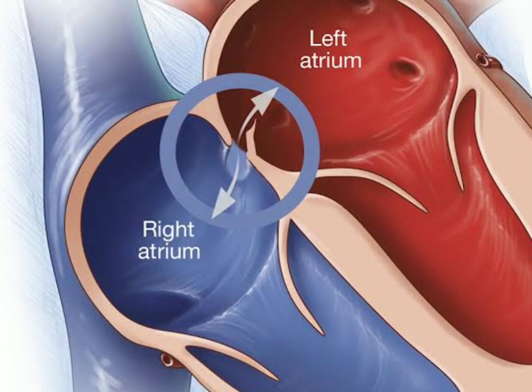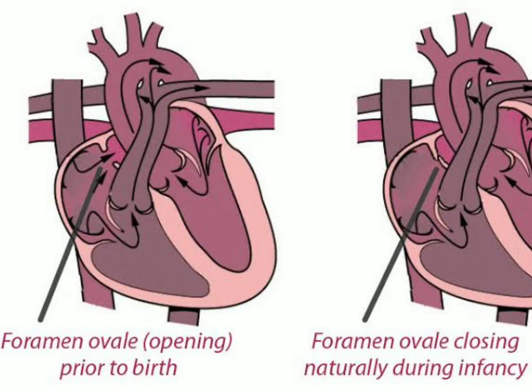During fetal life, the fossa ovalis was called the foramen ovale and it was open, allowing direct communication between the right atrium and the left atrium. After birth, the foramen ovale closes and forms the oval-shaped smooth depression called the fossa ovalis, which is formed by the fusion of the septum primum and septum secundum. The septum secundum becomes the limbus fossa ovalis and the septum primum becomes the fossa ovalis.